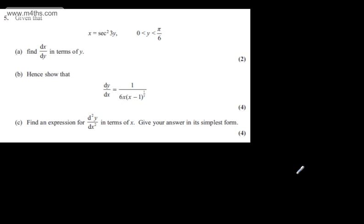This is question number five. Given that x is equal to sec squared 3y, where y is between 0 and pi by 6, in part A for two marks, find dx/dy in terms of y.